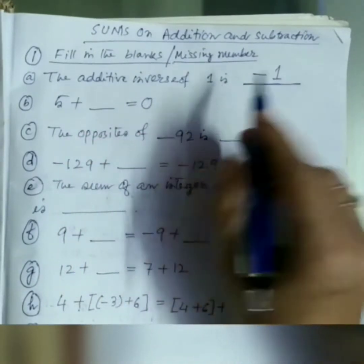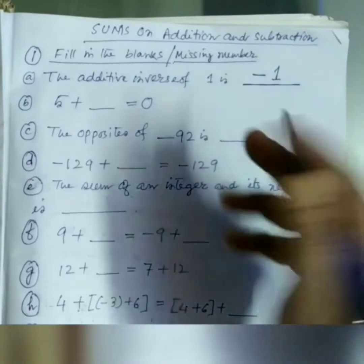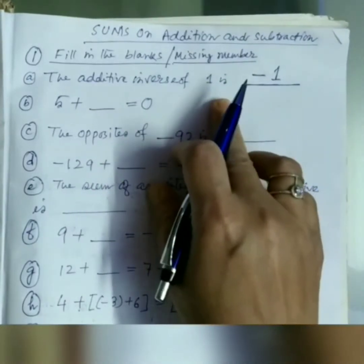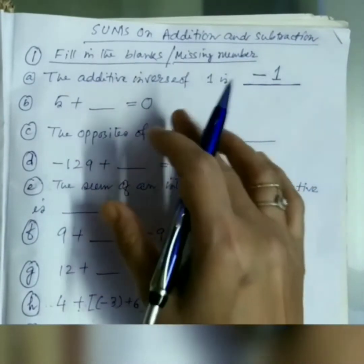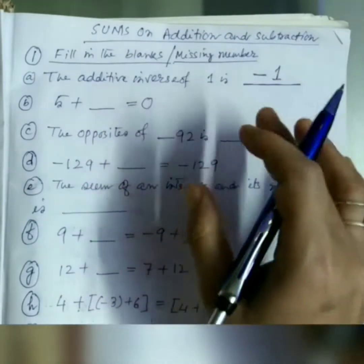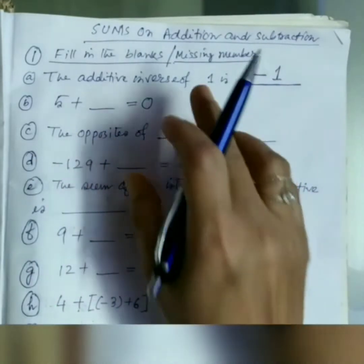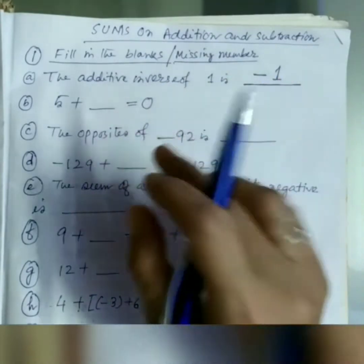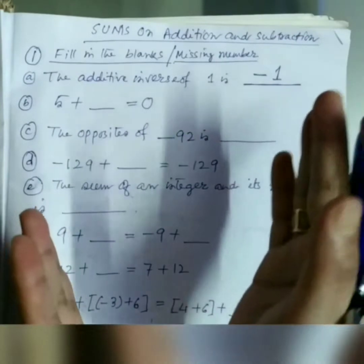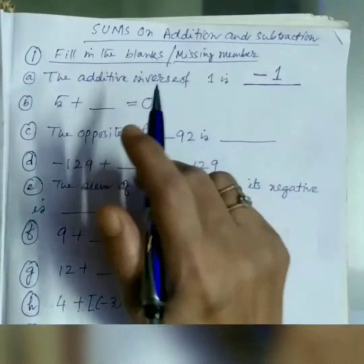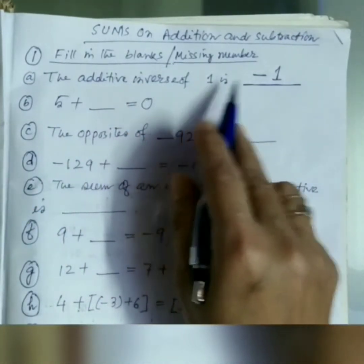The additive inverse of 1 is how much? The additive inverse of 1 is minus 1. This is from the existence of additive inverse properties of addition of integers — for every a, there is a minus a such that a plus minus a equals minus a plus a equals 0. So from existence of additive inverse, the answer is minus 1.